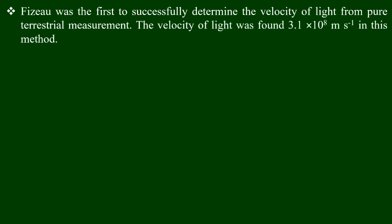Fizeau was the first to successfully determine the velocity of light through the terrestrial measurement. The velocity of light was found to be 3.1 times 10 to the power 8 meters per second in this method.